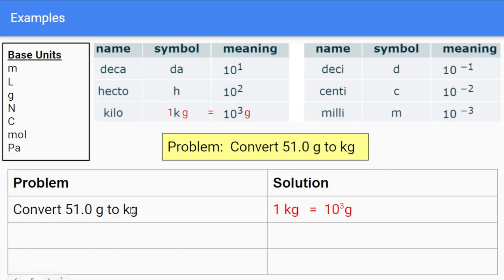In other words, when you convert from grams to kilograms, one kilogram is equal to 10 to the third grams.